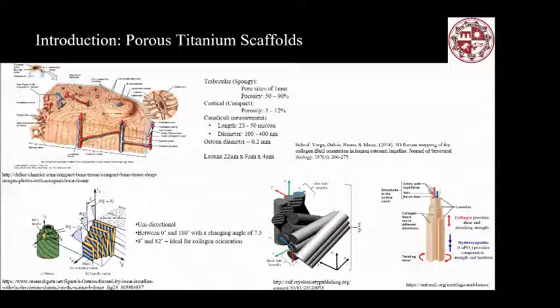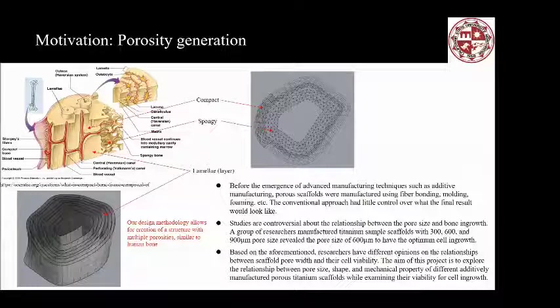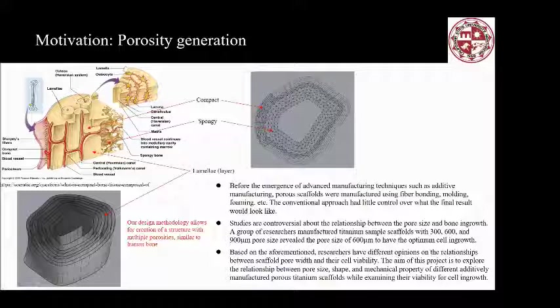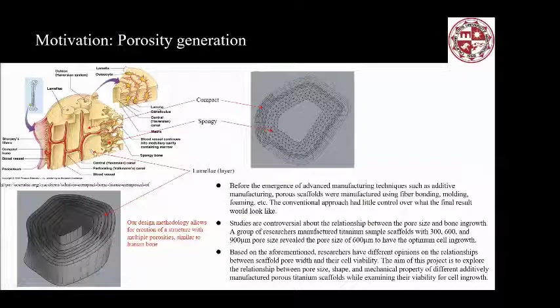The idea is to create the porosity we want. On the left side you can see the spongy structure, which has a lot of pores inside, and here is the compact structure in the bone. There are different layers — called lamellae — which allow for nutrient transfer. Our design allows for the creation of structures with multiple porosities similar to the human bone.